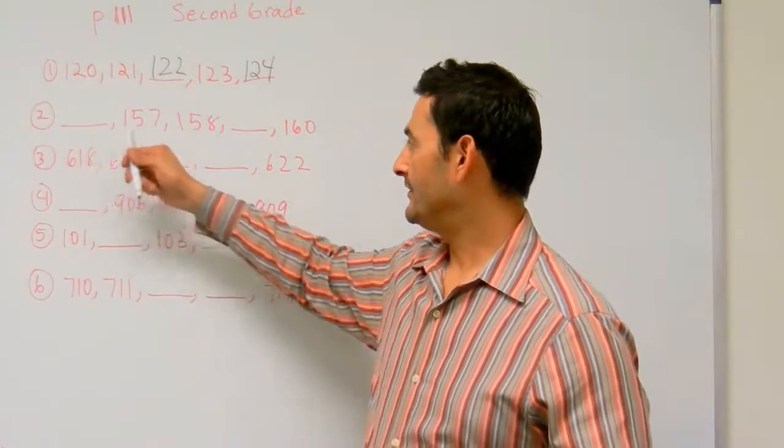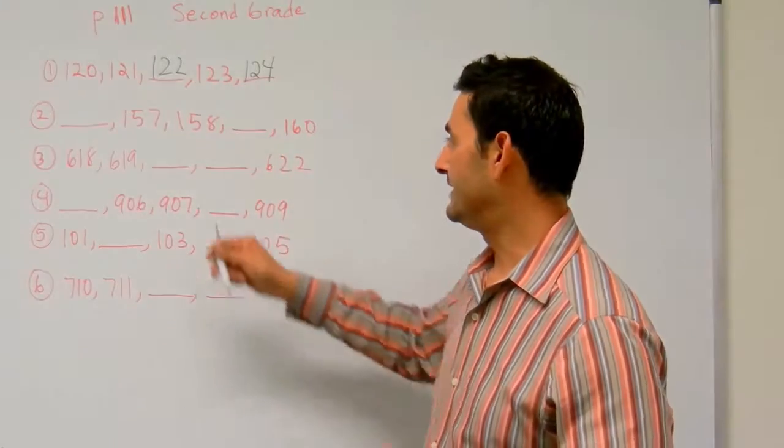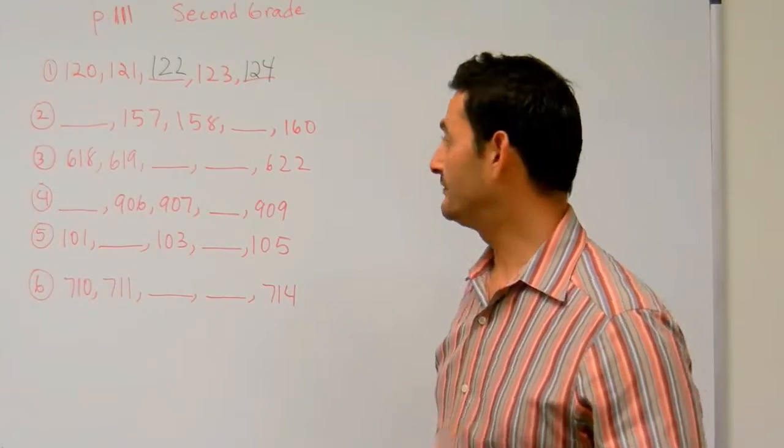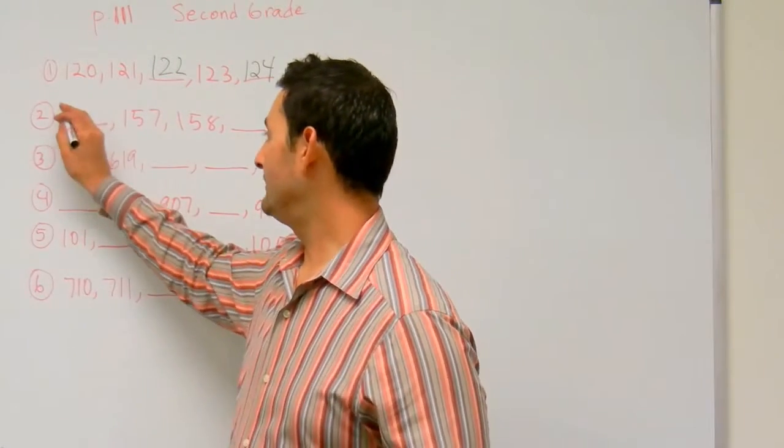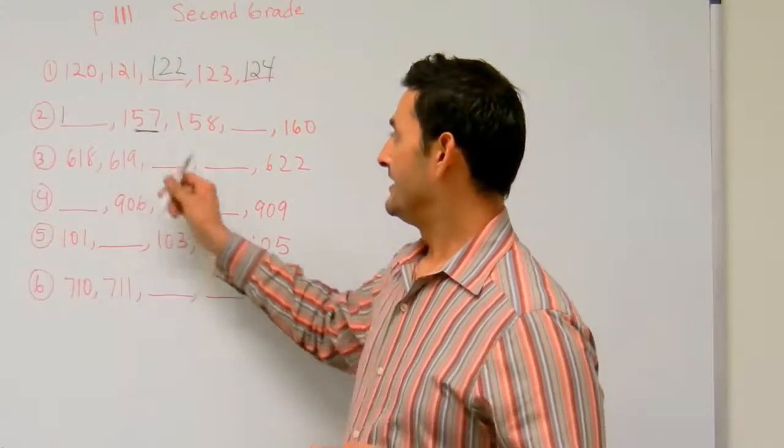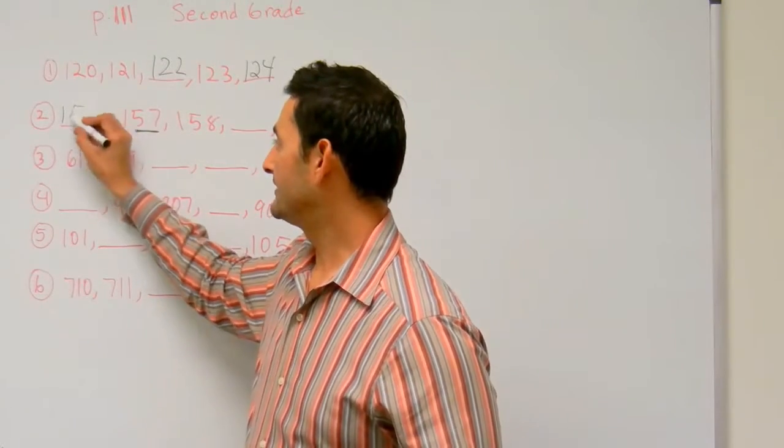Here we have a missing number. Then we have 157, 158, blank, 160. So how do I find that missing number there? Well, let's just use our knowledge of place value. So that's going to be 100 there. And here we have 57. Let's use our knowledge of place value again. So we have a 5 there. That's not going to change. And then 6.